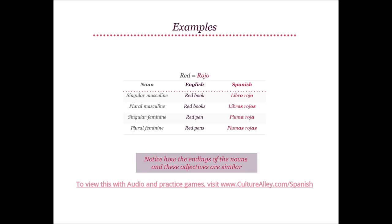Red translates to rojo. Red book translates to libro rojo — that is the singular masculine form. Red books will be libros rojos — the plural masculine form. Red pen becomes pluma roja — singular feminine form, as pluma is feminine. Hence, red pens translates to plumas rojas — the plural feminine form. Notice how the endings of the nouns and these adjectives are similar.